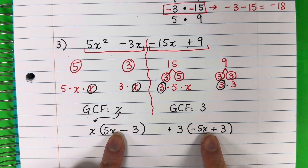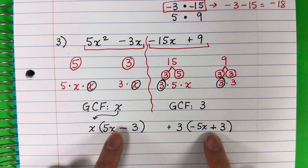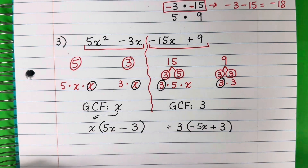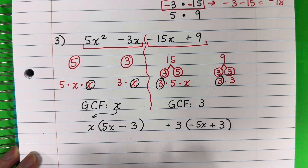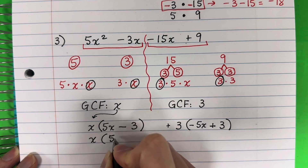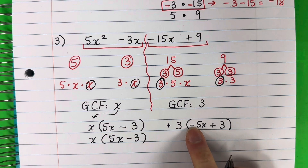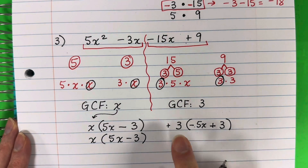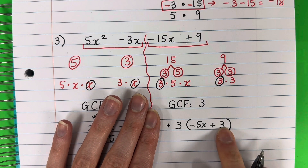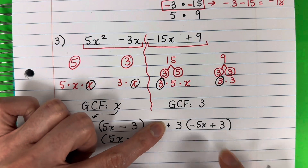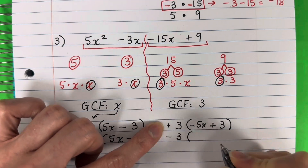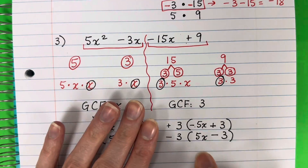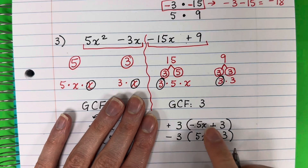Now take a look — these are almost the same but the signs are complete opposites: one is positive where the other is negative. So what I'm going to do is take out a negative from the second group and put it outside, changing all the signs to their opposites inside. So negative 3 times open parenthesis: the opposite of minus is plus, so plus 5x; the opposite of plus is minus, so minus 3. Now the two parenthetical expressions match.